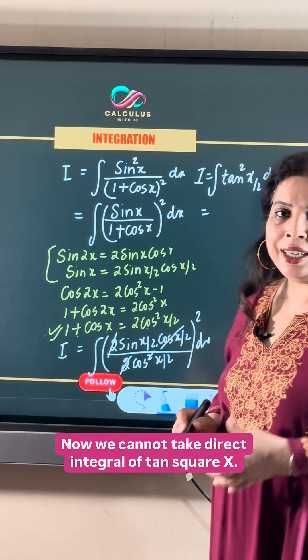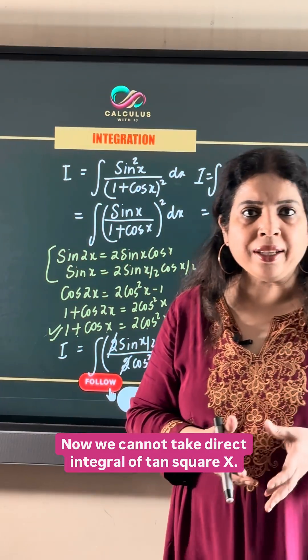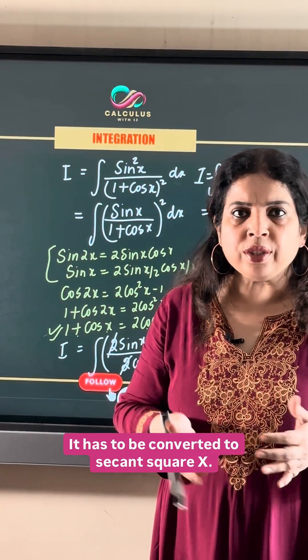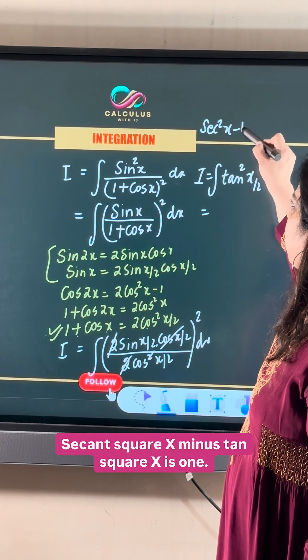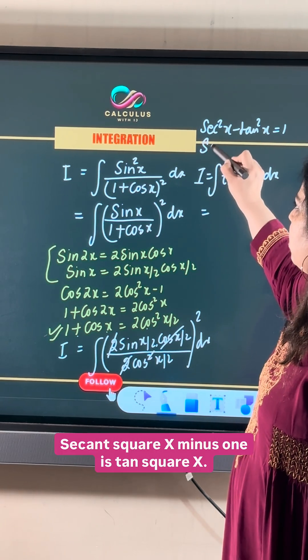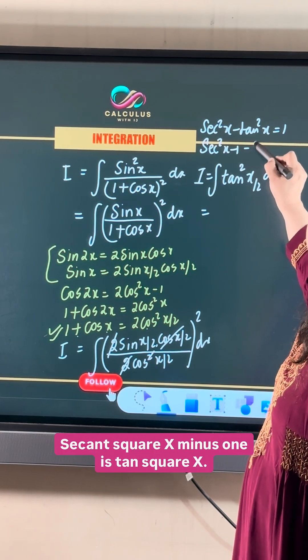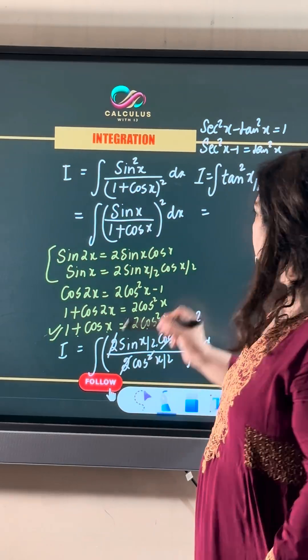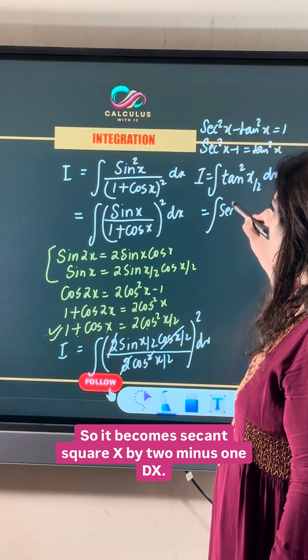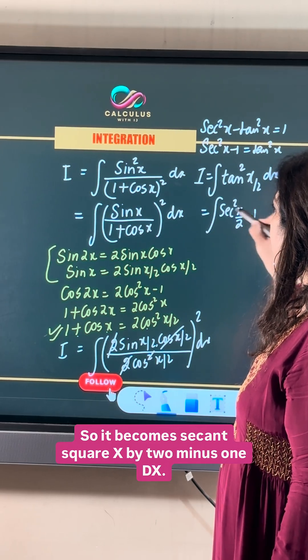We cannot take the direct integral of tan square x. It has to be converted to secant square x. Since secant square x minus tan square x is 1, tan square x equals secant square x minus 1. Since we have tan square x by 2, it becomes secant square x by 2 minus 1 dx.